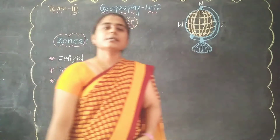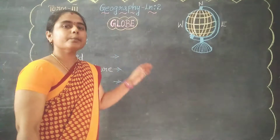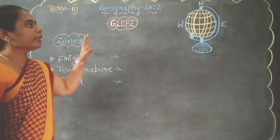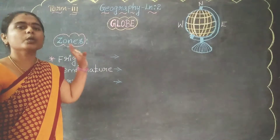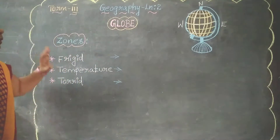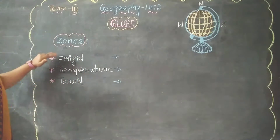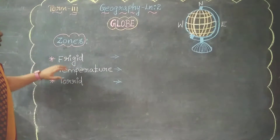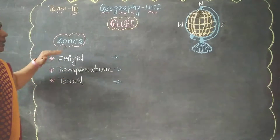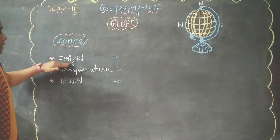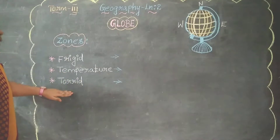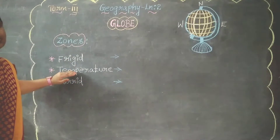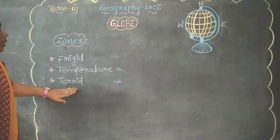Welcome back friends. We are going to learn about the zones — zones in the globe. So what are the zones present in the globe? There are three zones. What are the three zones present in the globe? Frigid, temperate, torrid. So frigid zone, temperate zone, torrid zone.